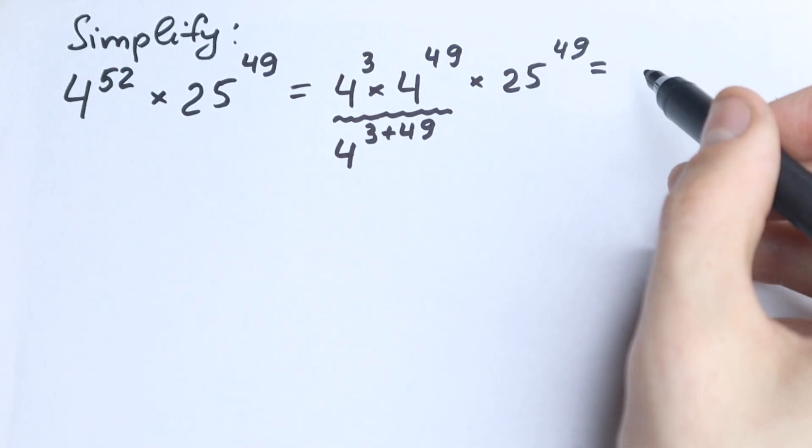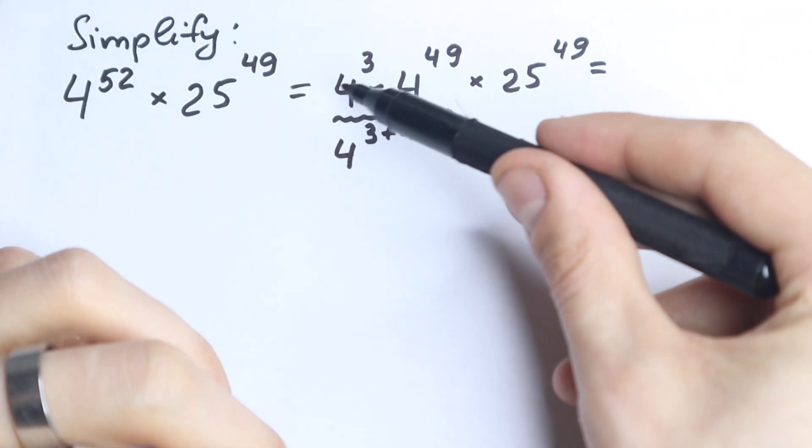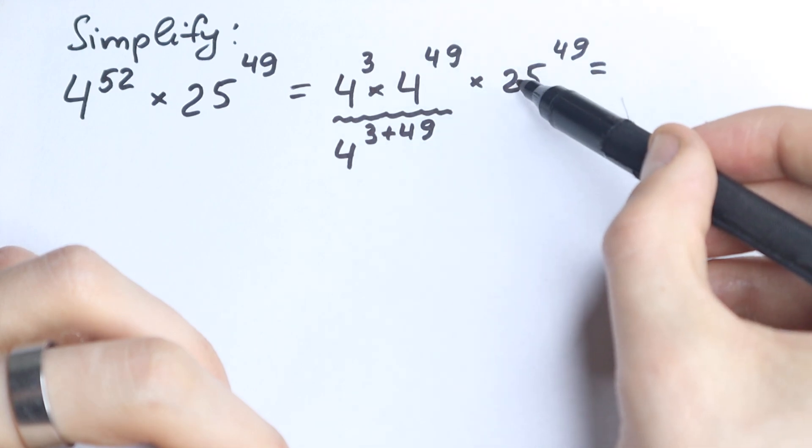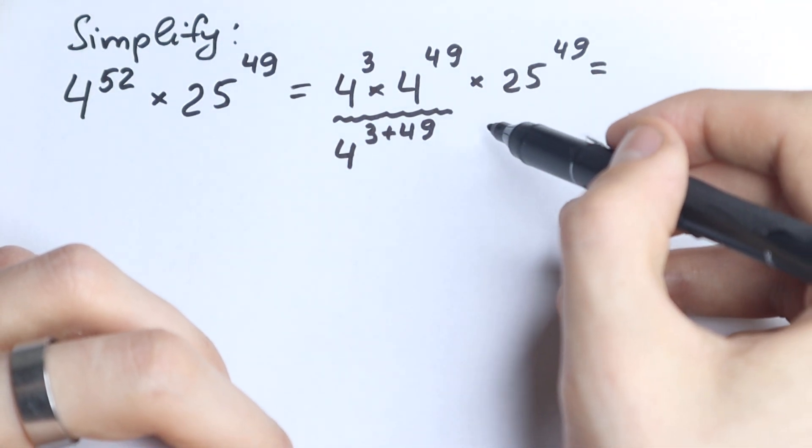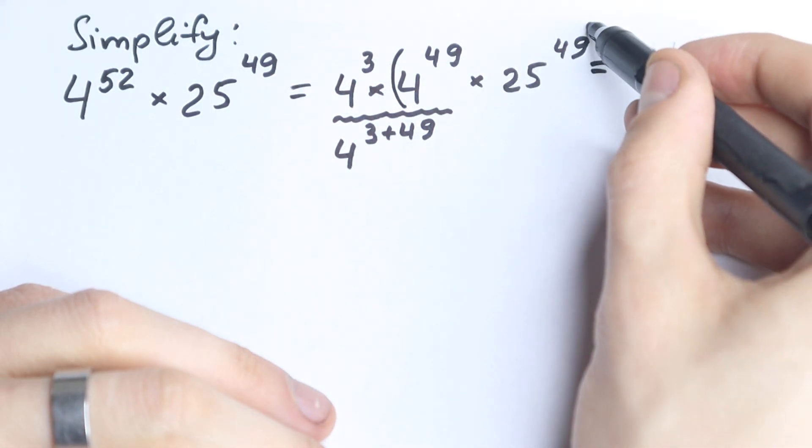What are we going to do next? We need to group. Take a look closely. We have the same base right here, but we don't need these two numbers. We need to group these 4 to the 49 and 25 to the power 49, because we have a product all the time, so nothing changes for us. So we can easily group it. So right here we group these two elements.